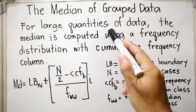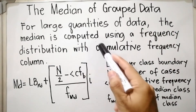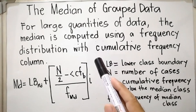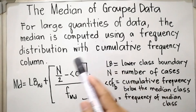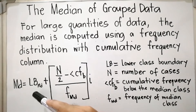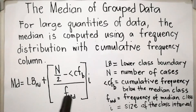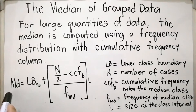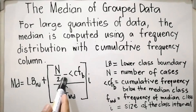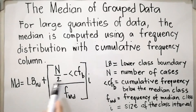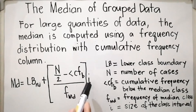For large quantities of data, the median is computed using a frequency distribution with a cumulative frequency column. The median is the sum of the lower boundary and the fractional part of the class interval size. This is the formula: MD is equal to LB of the median class plus the quantity of N over 2 minus less-than CF below the median class, all over F of the median class, times I.